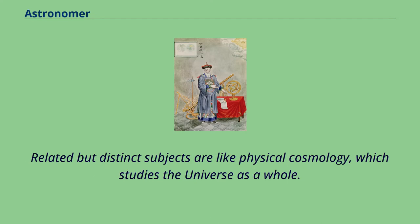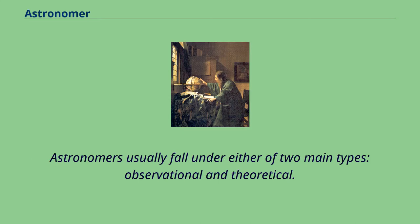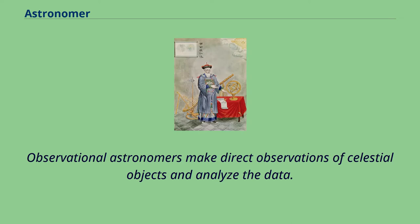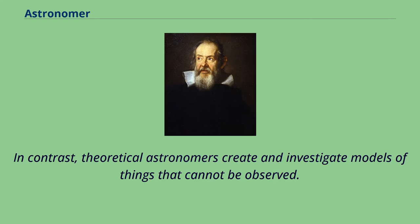Related but distinct subjects include physical cosmology, which studies the universe as a whole. Astronomers usually fall under either of two main types: observational and theoretical. Observational astronomers make direct observations of celestial objects and analyze the data. In contrast, theoretical astronomers create and investigate models of things that cannot be observed.